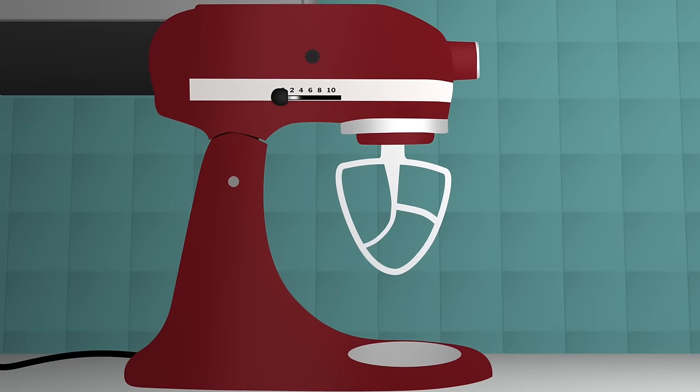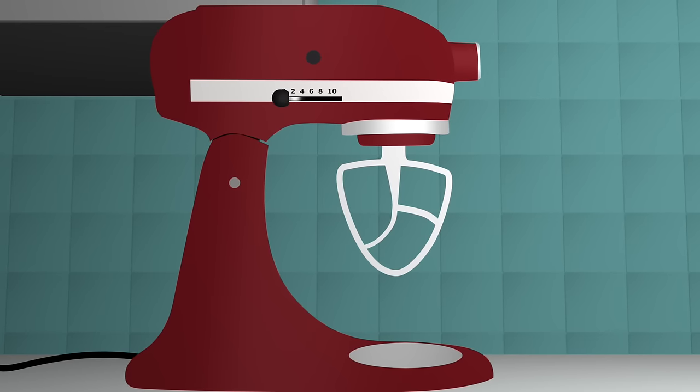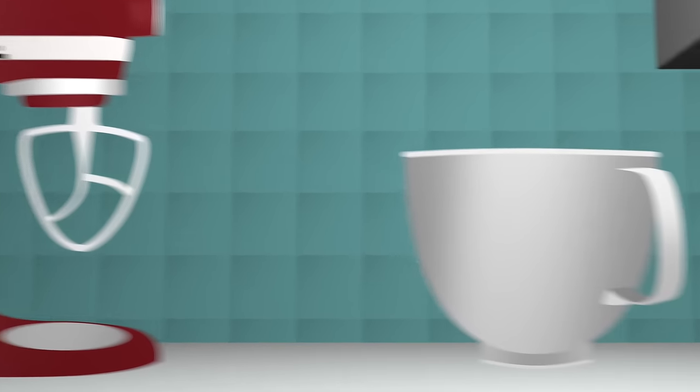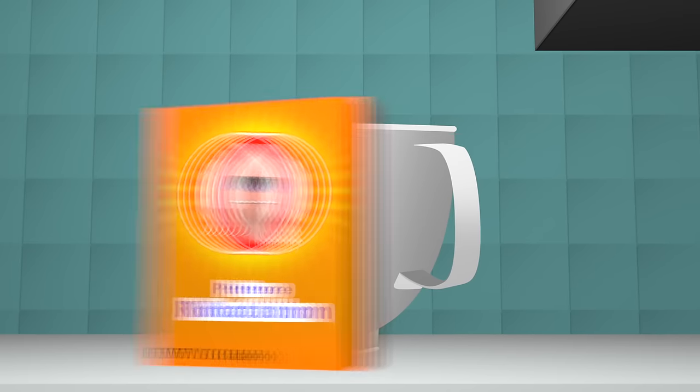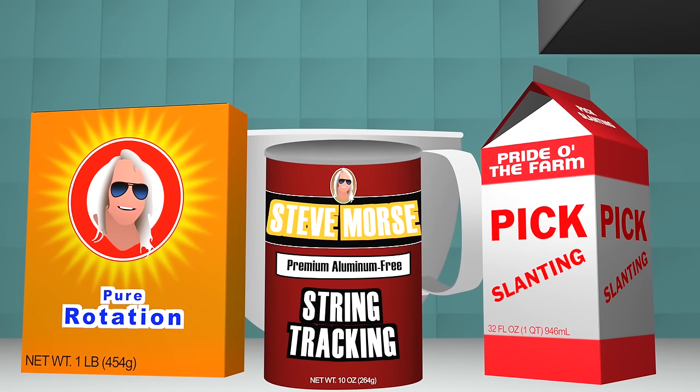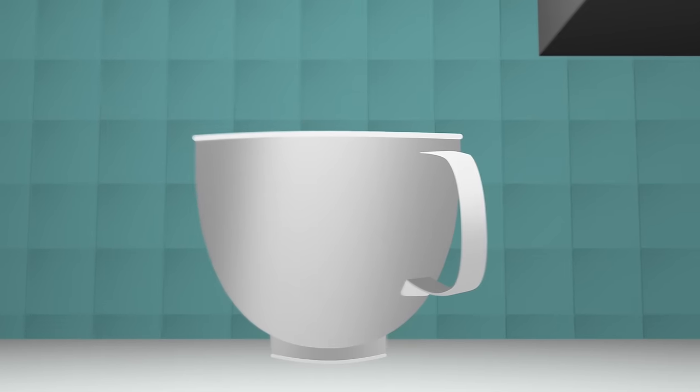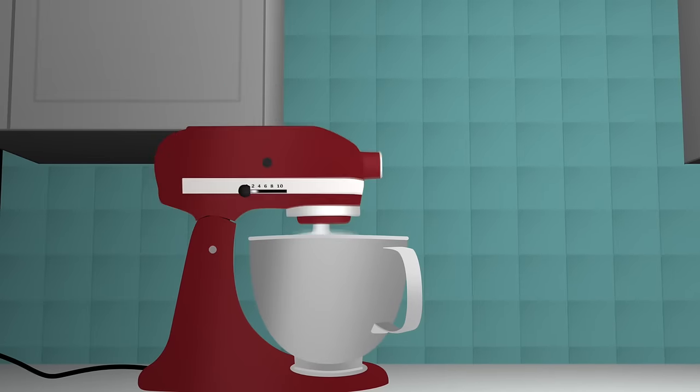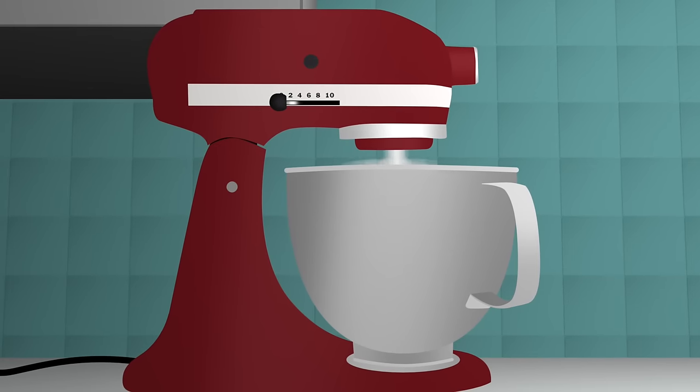In fact, it turns out that these three ingredients - rotation, string tracking, and directionality - are the universal ingredients of one note per string alternate picking. And once you know what to look for, you'll see them all the time.